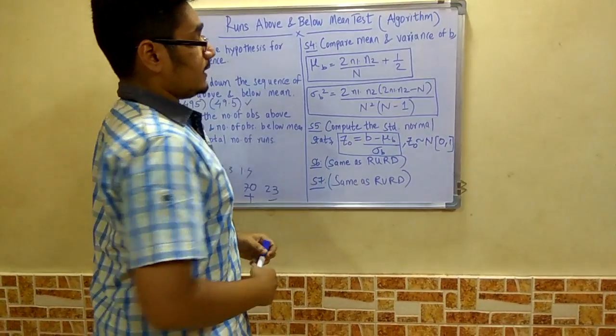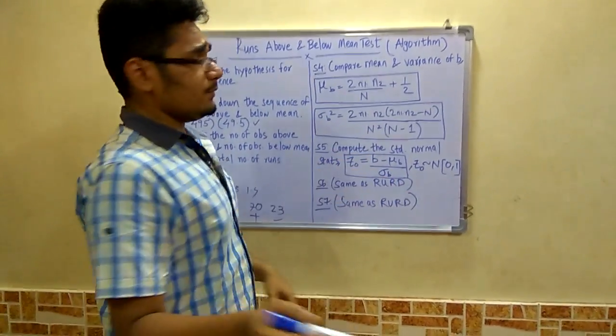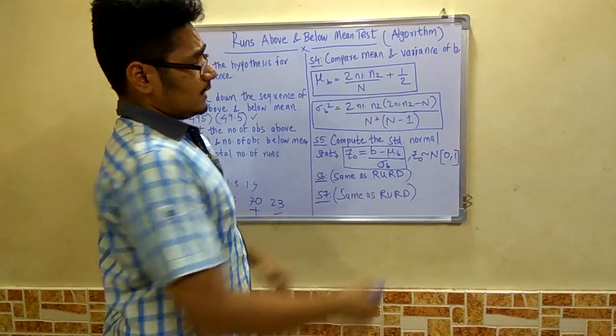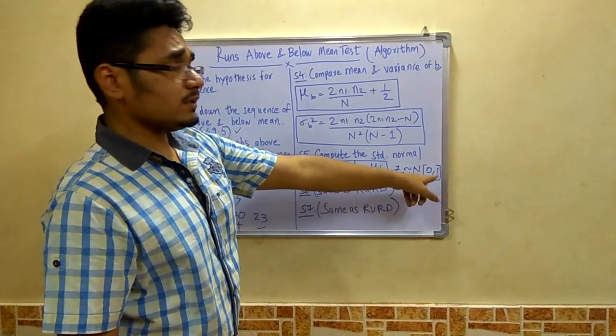Next is step 5, that is computing the standard normal statistics. Z0 as b minus mu b upon sigma b, where Z0 is normally distributed in the interval 0,1.